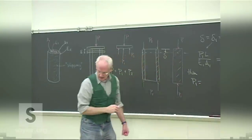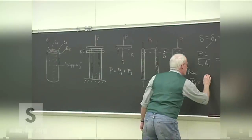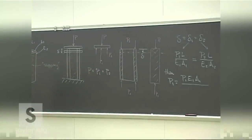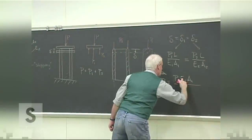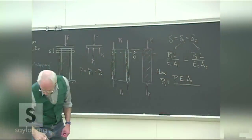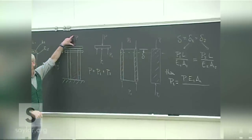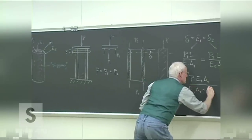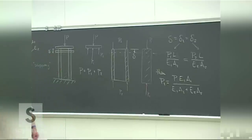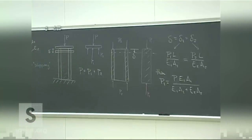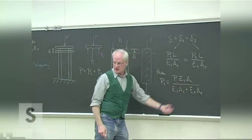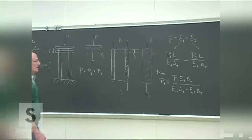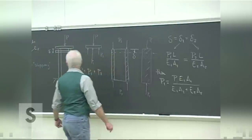Without going through all the algebra, the solution for P1 is: P · E1·A1 divided by (E1·A1 + E2·A2). P2 looks the same but with the subscripts changed to 2 in the numerator. Once the forces are known, divide by the individual areas to get the stress. Then we can design to avoid maximum stress.